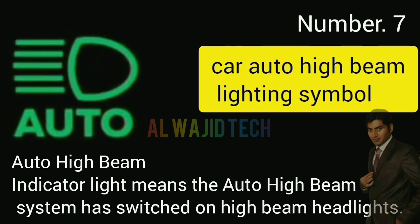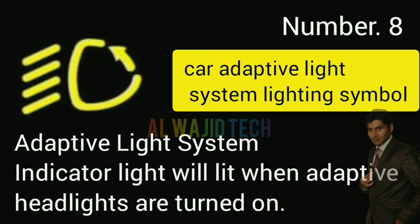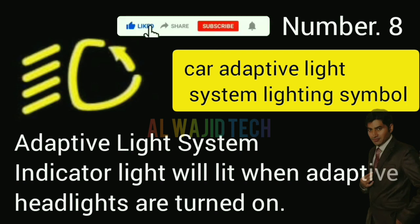Number seven: Car auto high beam indicator means the auto high beam system has switched on the high beam headlights. Number eight: Car adaptive light system indicator will illuminate when adaptive headlights are turned on.